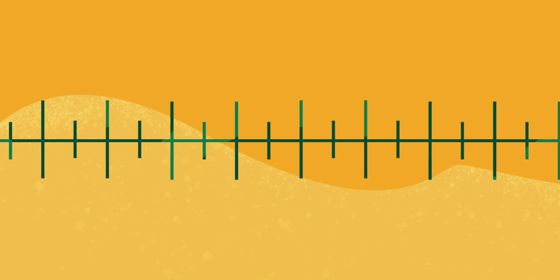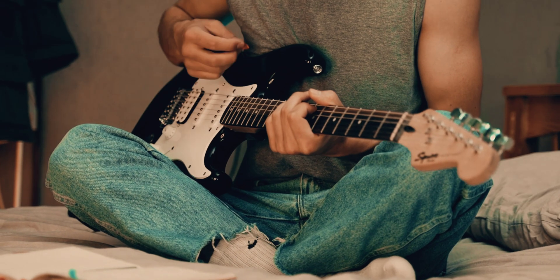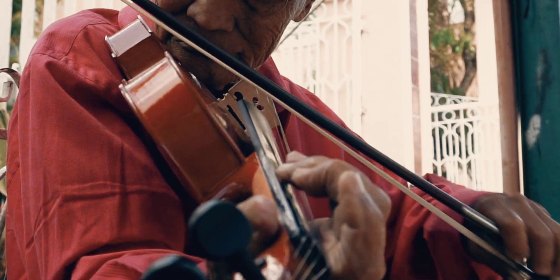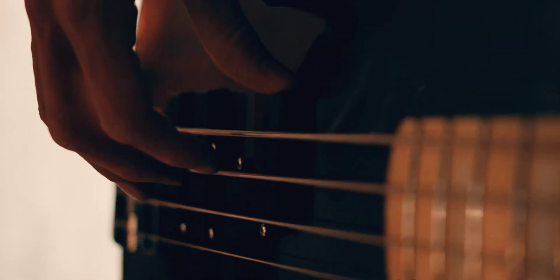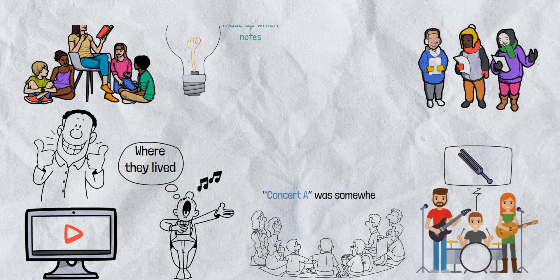Well, the answer is actually pretty crazy. Our story starts in the 1800s. Before music was available in any digital medium, musicians would tune their instruments essentially however they wanted, or use a tuning fork to set the pitch of a specific note. Different countries and even different cities all had their own idea of which frequencies made up which notes. Music spread more and more, and it became commonly accepted that the concert A — the A above middle C — was played somewhere in the lower to middle 400 hertz range.